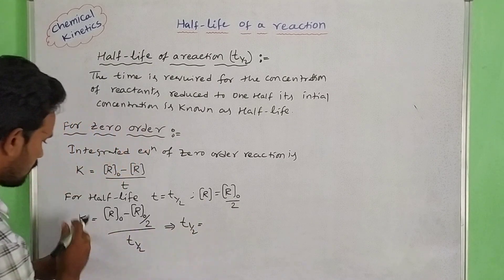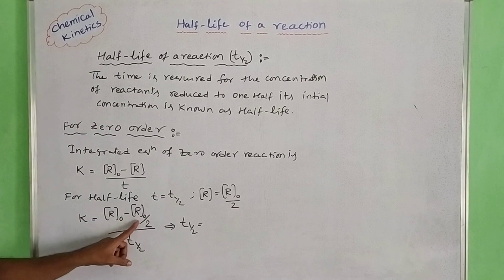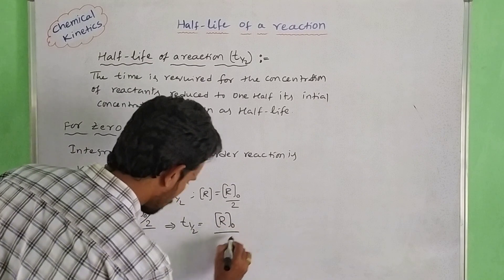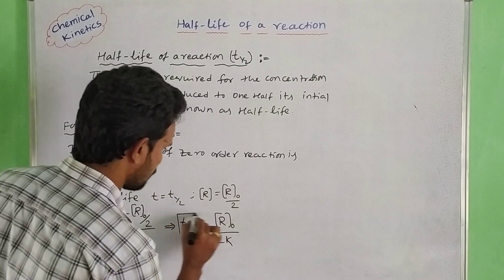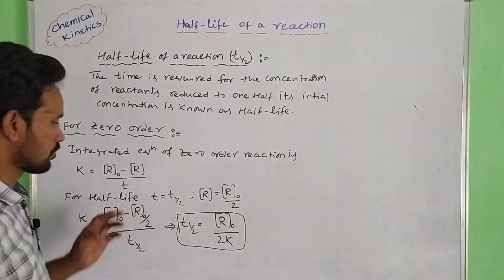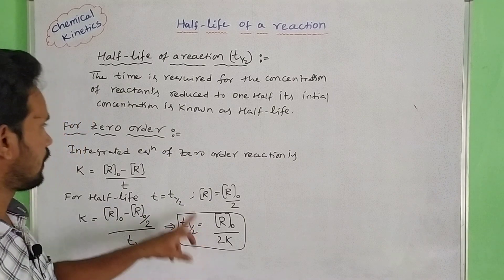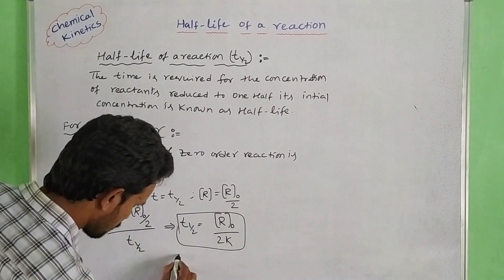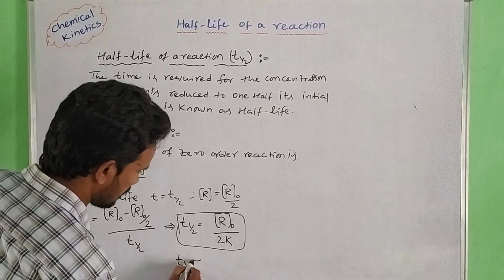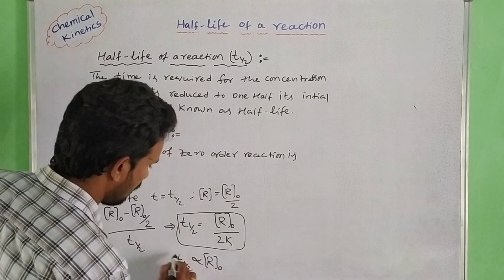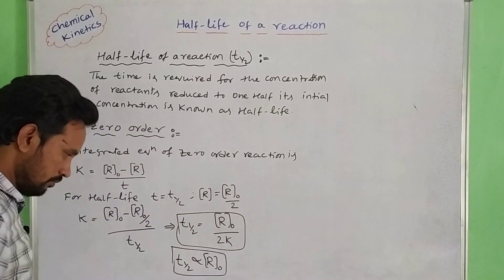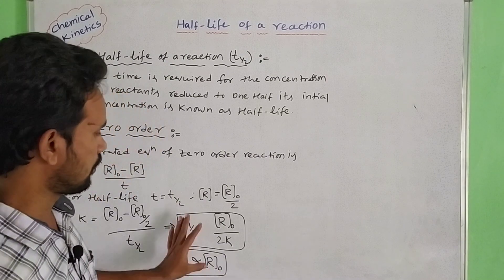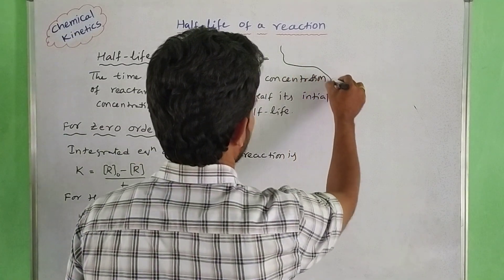Rearranging, T₁/₂ equals R₀ by 2K. So the half-life of a zero-order reaction is T-half equal to R₀ divided by 2K. This shows that the half-life of a zero-order reaction is directly proportional to the initial concentration R₀, meaning it is dependent on the concentration of R₀.